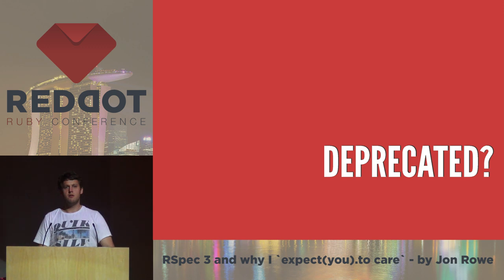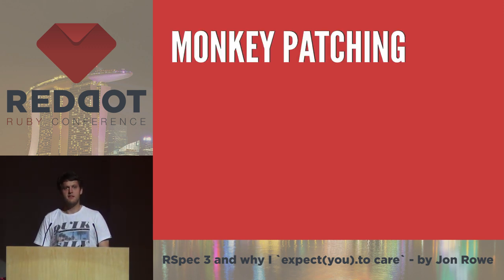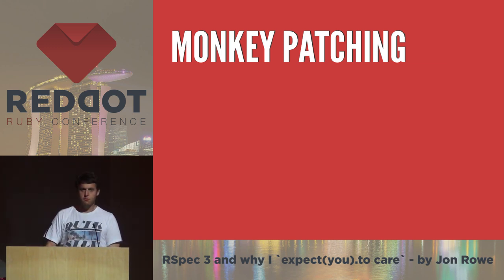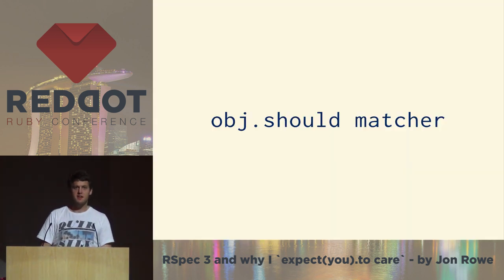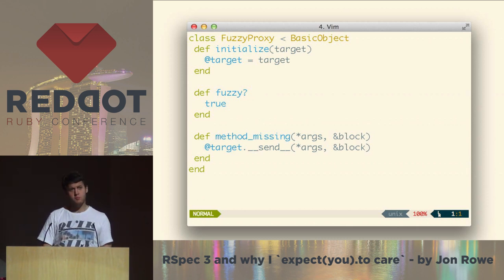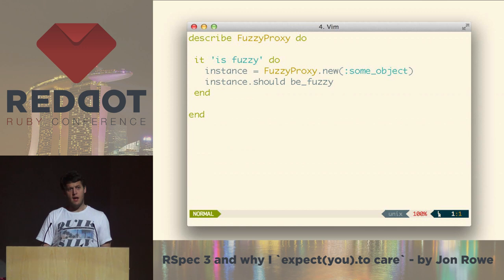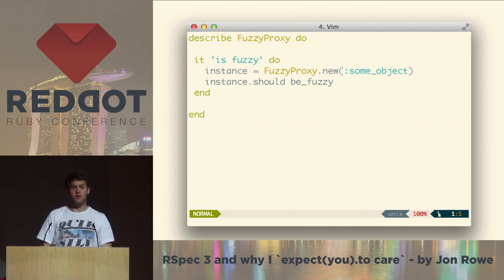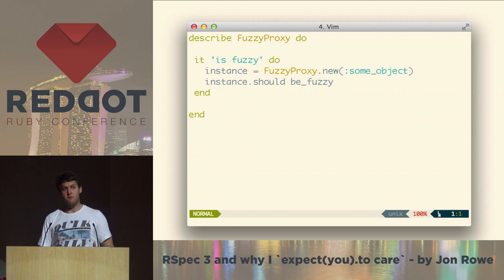But what actually made us change this recommendation? The answer to that is monkey patching. Most Rubyists are familiar with this - we open a class or module and we insert some code. This syntax is monkey patching - it's putting should onto every object in the system. And it can go horribly wrong. The original reason for writing the expect syntax was cases like a proxy object. When the expect syntax was introduced, this actually would have tried to be tested using should. And it wouldn't work, because the way that should is monkey-patched into kernel overrides on the object. Be fuzzy tries to match against fuzzy question mark, it falls back to method missing, and you get an error about the method not actually existing on the object you're proxying to.